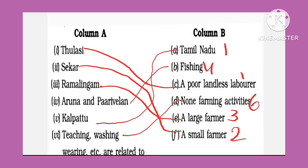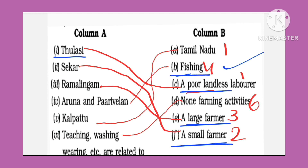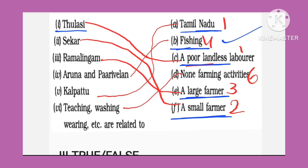Ab kuch matching dekhte hain. Tulsi hai woh landless garib majdur hai. Shakar small farmer hai, chota kisaan hai. Ramalingam large farmer hai, bada kisaan hai. Aruna aur Parivelan dono fishing karte hain. Kalpattu Tamil Nadu mein ek village hai. Teaching, washing, weaving, etc. are non-farming activities — kheti baadi se jude kaam nahi hain.